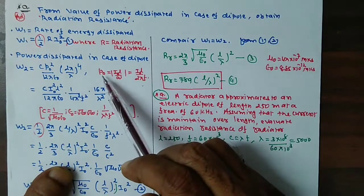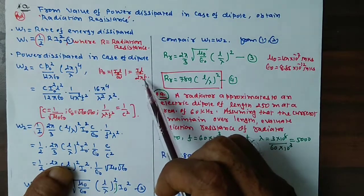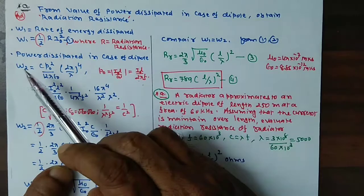And P0 what is? Dipole moment. This can be equal to IL divided by omega. So place this value in W2 equation.